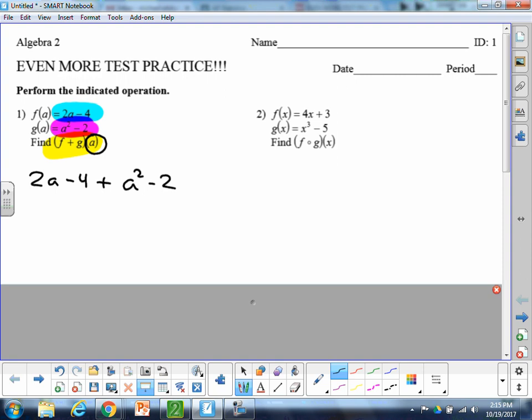And again, standard form's kind of get the biggest exponent first. So I'm going to write it as a squared. Then there's a positive 2a sitting there. And then I can combine minus 4 and minus 2 to be a minus 6. So that'd be it, final answer.